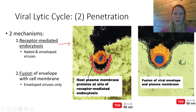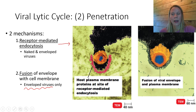The second option is called fusion, and fusion is only for enveloped viruses. Because they have an envelope that looks like a cell membrane, after the attachment stage the virus fuses with the membrane of the cell and then releases its nucleocapsid into the cytoplasm.